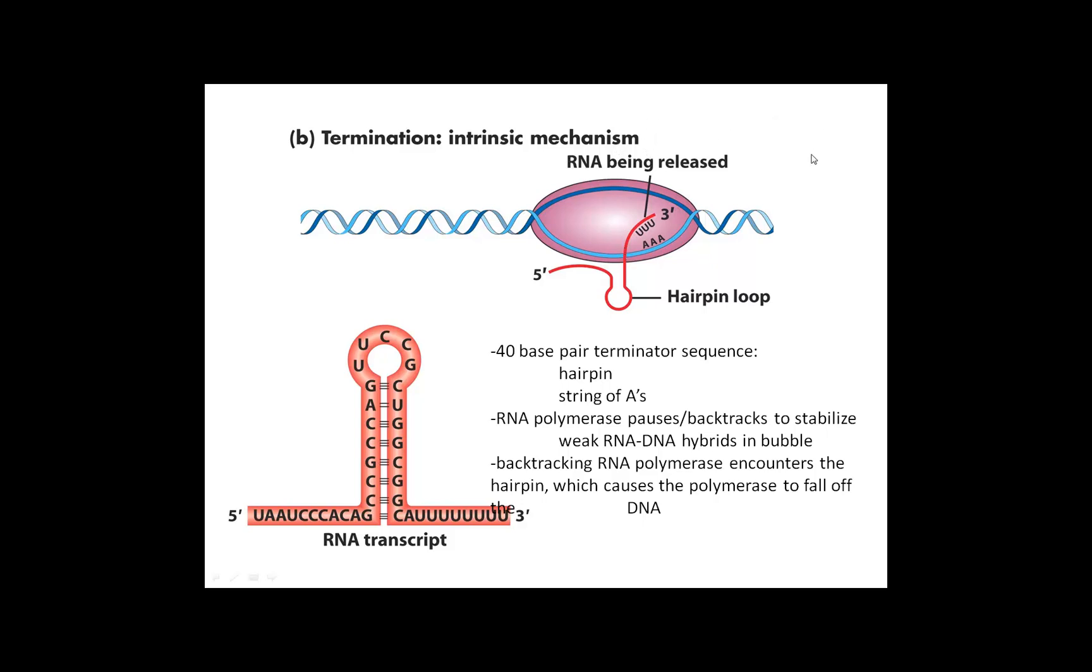Intrinsic termination depends on the formation of a hairpin loop in the RNA structure that is being transcribed. This RNA that has just been transcribed will actually base pair with itself and form this little loop with base pairs that are complementary base pairing with each other.